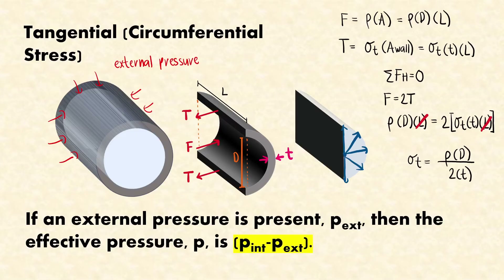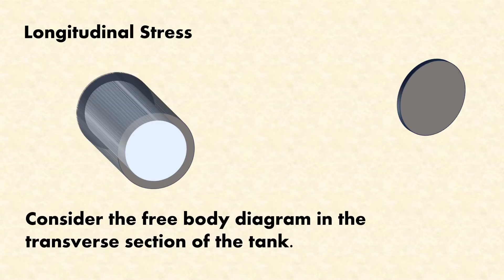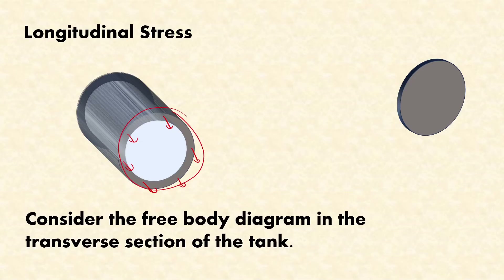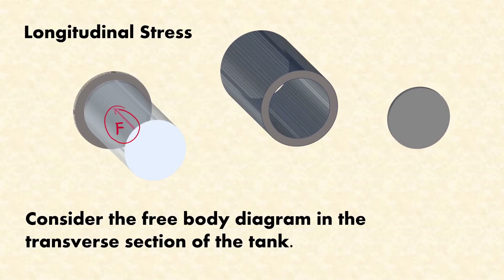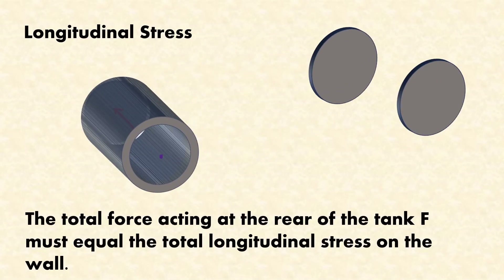Let's move on to the other type of stress: longitudinal stress. For longitudinal stress, we consider the free body diagram at the transverse section of the tank. The internal pressure is exerted on the cover of our thin-walled vessel. What resists bursting along the circumference or girth of the tank is the wall itself. This is our FBD, with force F acting toward the covers on each side.